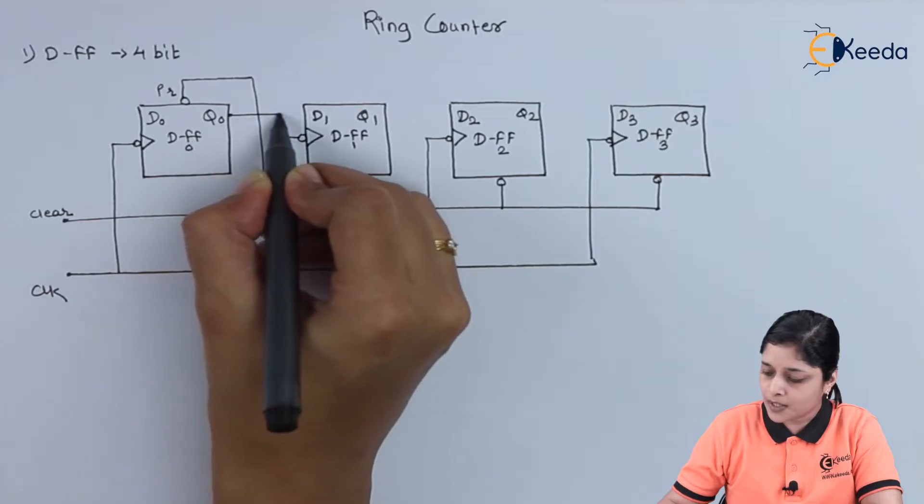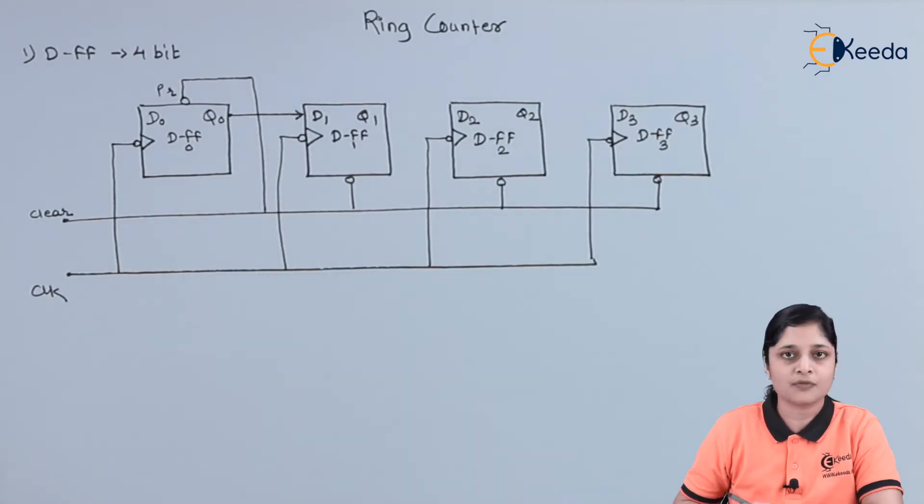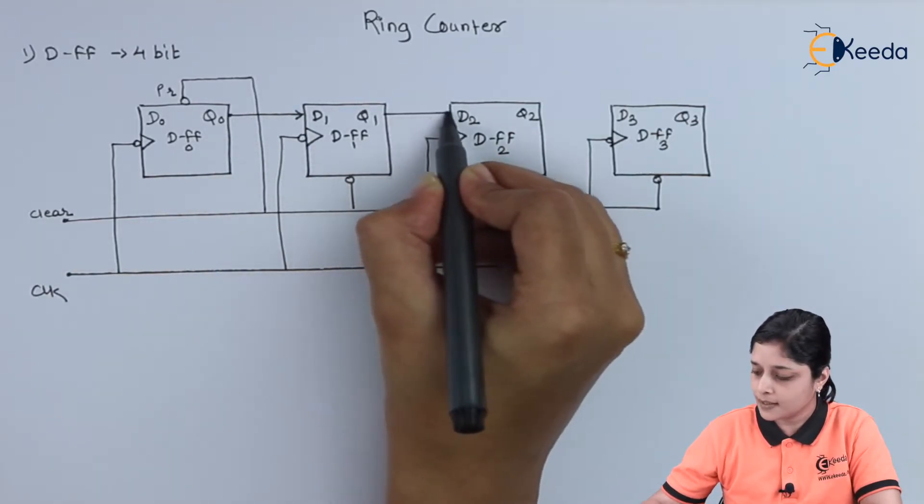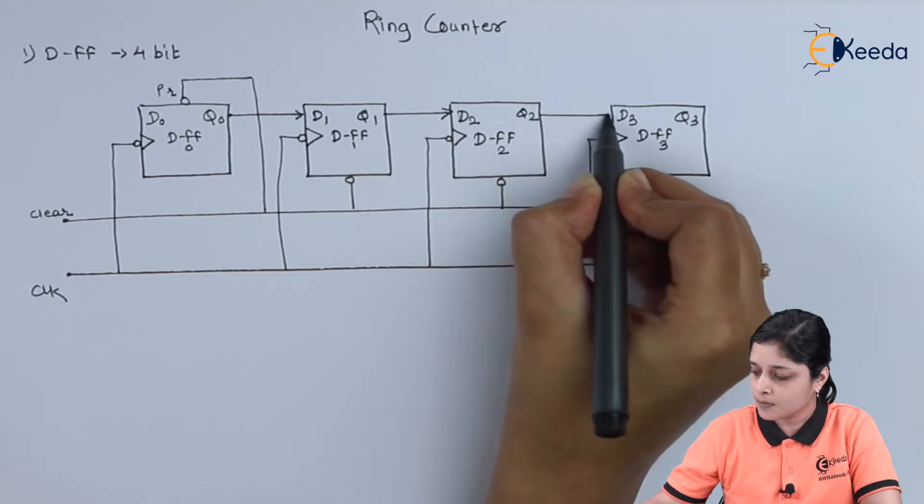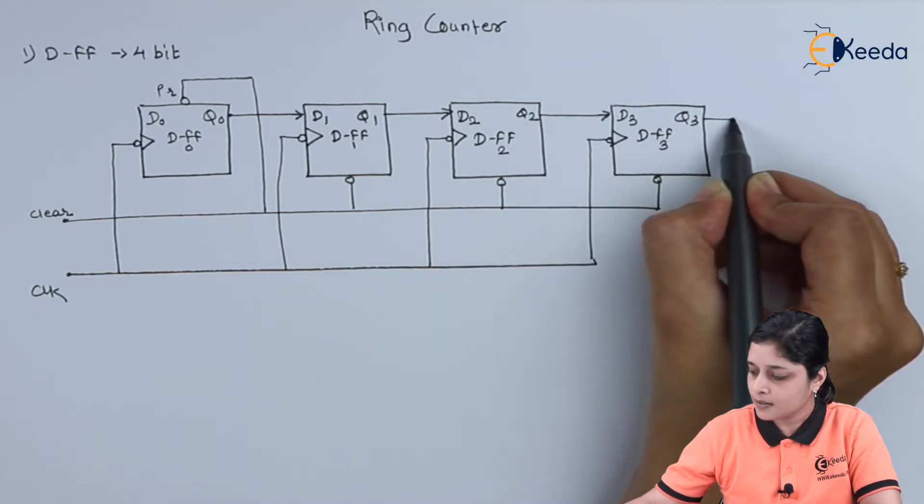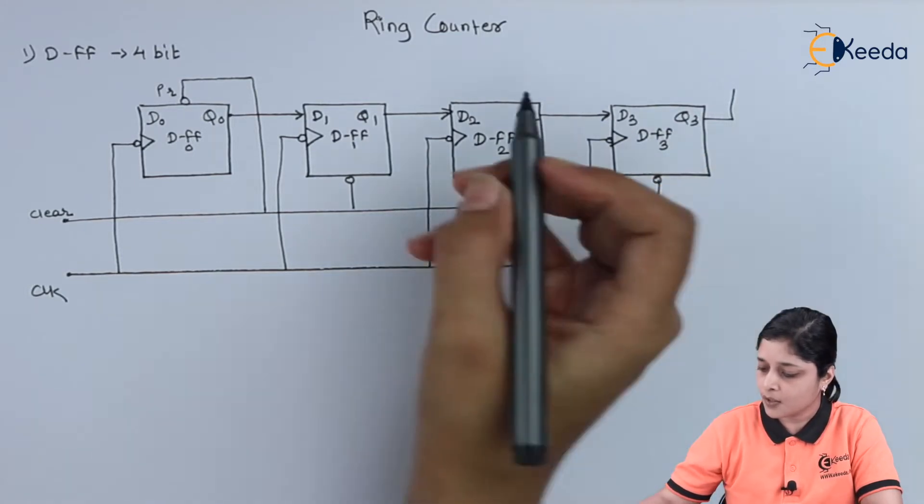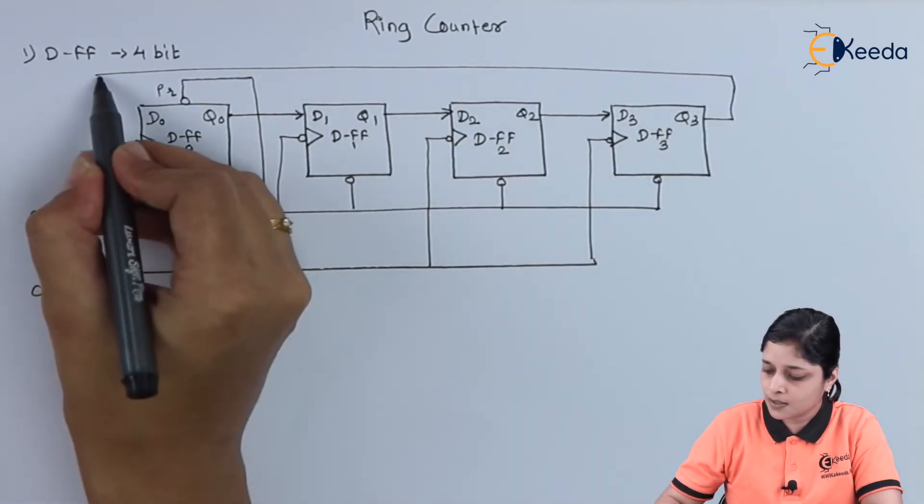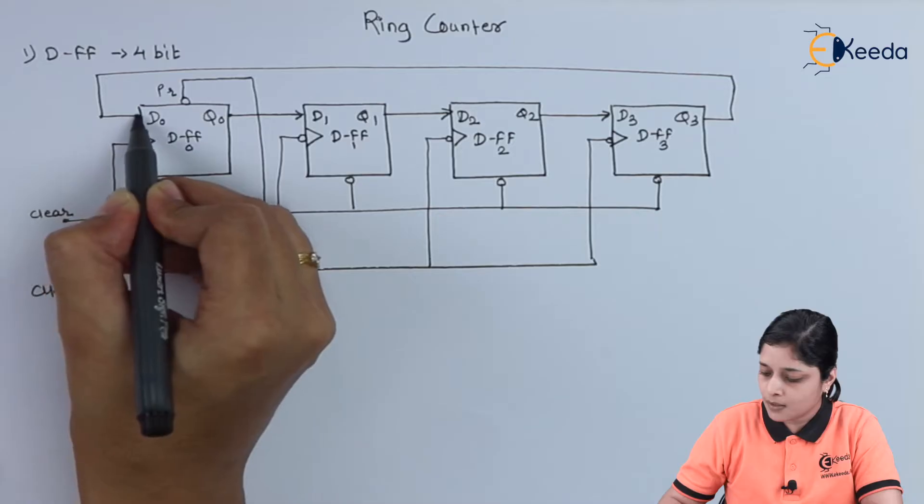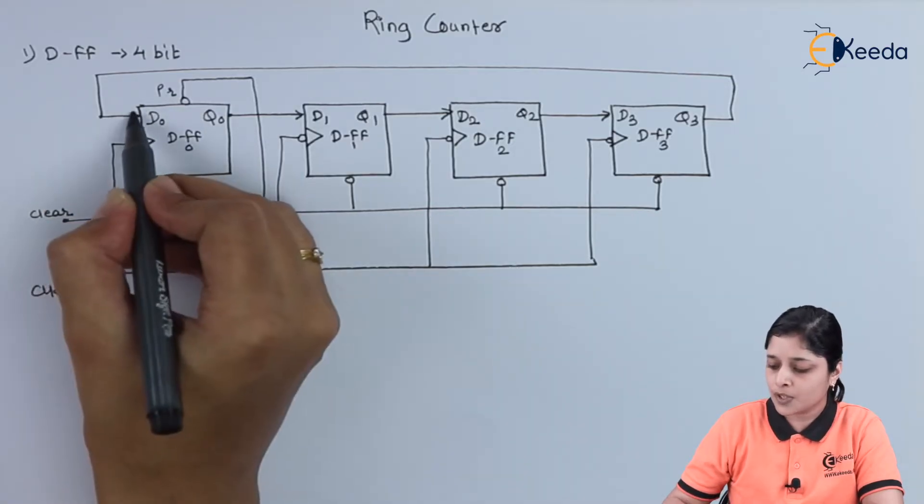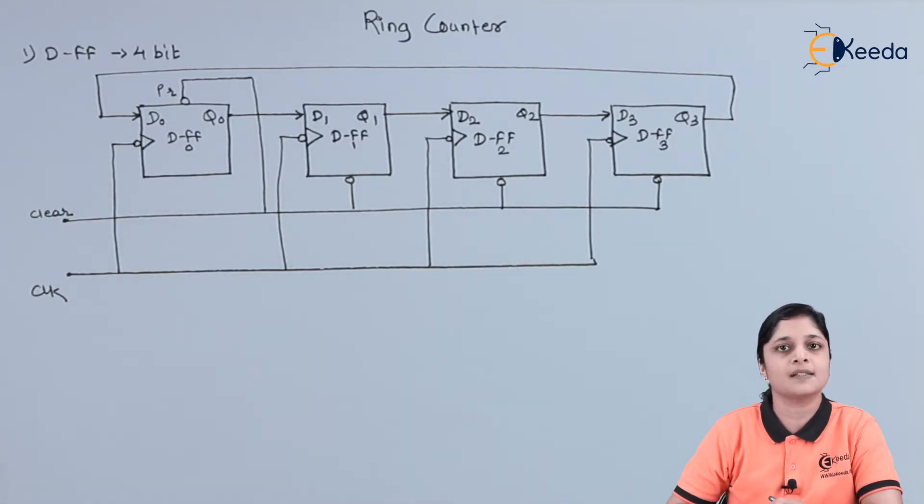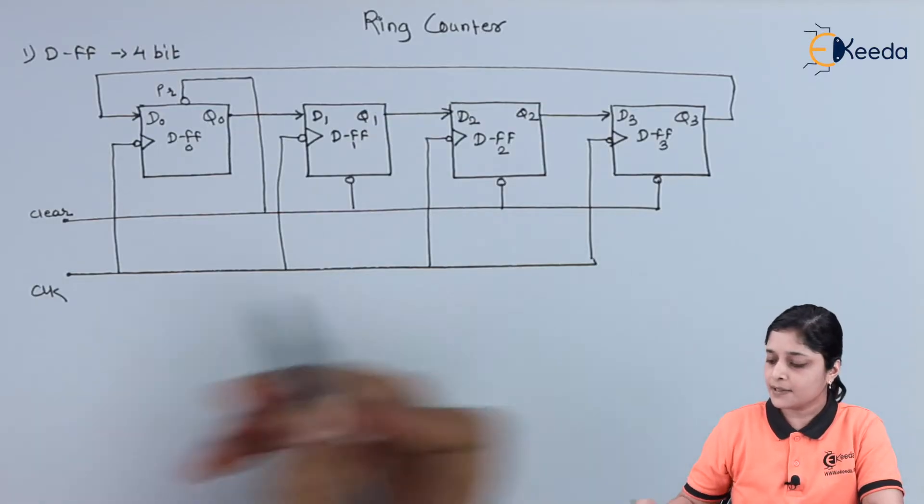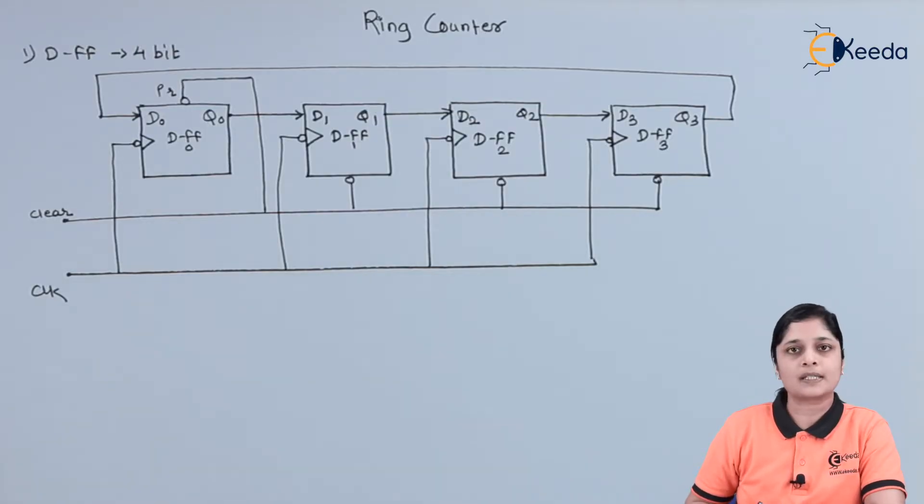This output is connected to the input of the next flip-flop while designing the ring counter. And logic behind the ring counter is what? This Q3 is input to the first flip-flop that is D0. In this way, the whole circuit or you can say the logic diagram for ring counter is this.